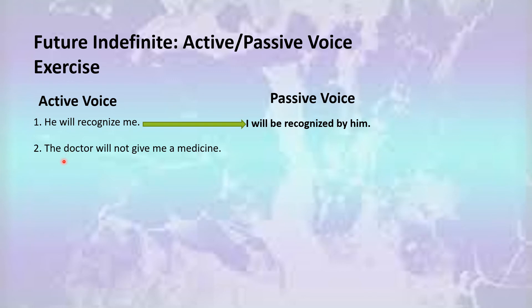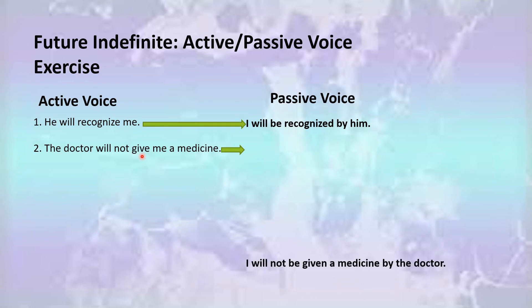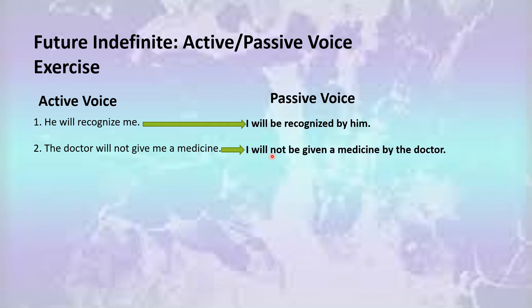Number two: 'The doctor will not give me a medicine.' You can identify by 'will not give' that this is the negative sentence of future indefinite tense. You will convert it like this: 'I will not be given a medicine by the doctor.' 'Me' is the object, so it is taken out to the start as 'I'. Then 'will not be' shows it is negative, followed by 'given' as the third form of the verb, 'a medicine', and 'by the doctor.'